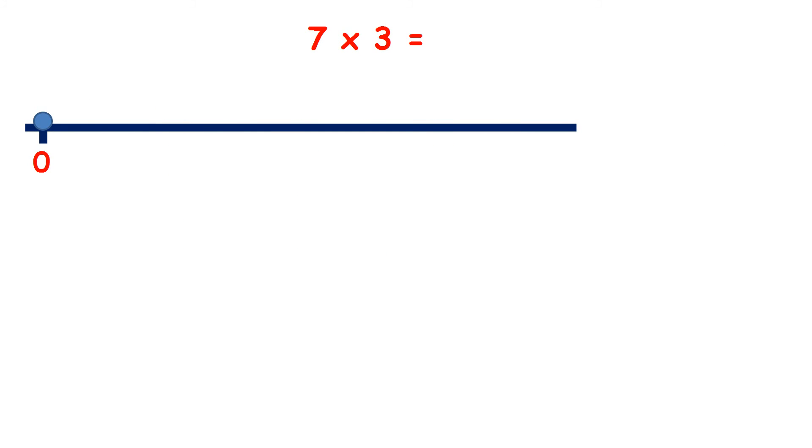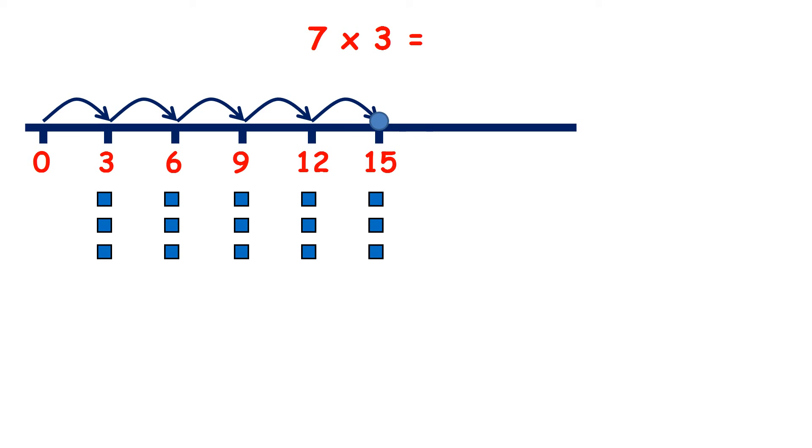Now pause the video and see if you can answer 7 times 3. So let's count in steps of 3 seven times. 3, 6, 9, 12, 15, 18, 21. So 7 times 3 is 21.